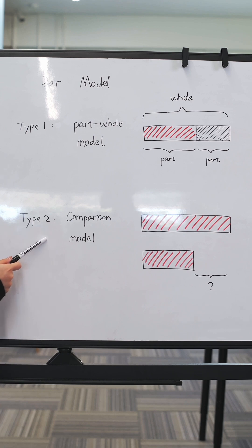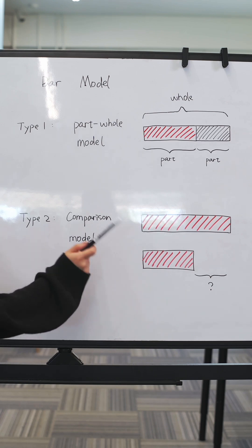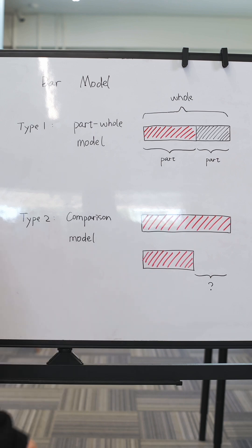Type 2 is the comparison model. This one is used when we want to compare two amounts. We know one is more or less than the other, and then we want to find the difference. This model works well for difference or how many more type problems.